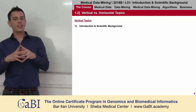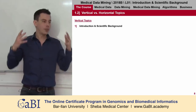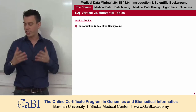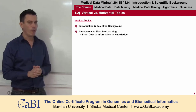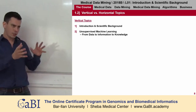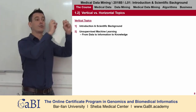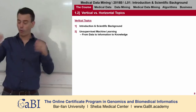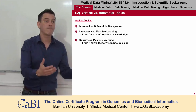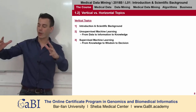This course is built intertwined between horizontal and vertical topics. The vertical topics are what each lesson covers. The first lesson is introduction and scientific background. Then we move to unsupervised machine learning — the move from data to information to knowledge. Topic three is supervised machine learning, where we feed the machine with examples from real life and experts — the next step in the ladder, moving from knowledge to wisdom to decision.